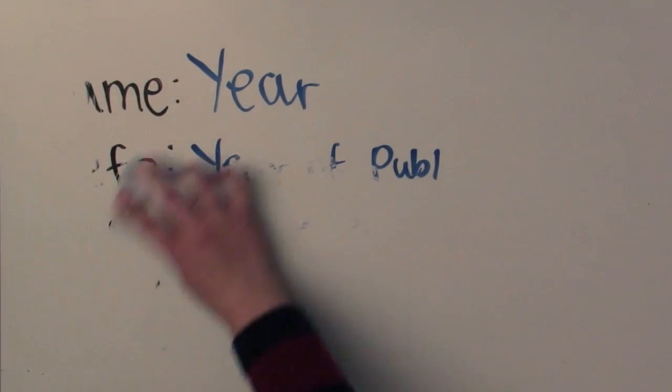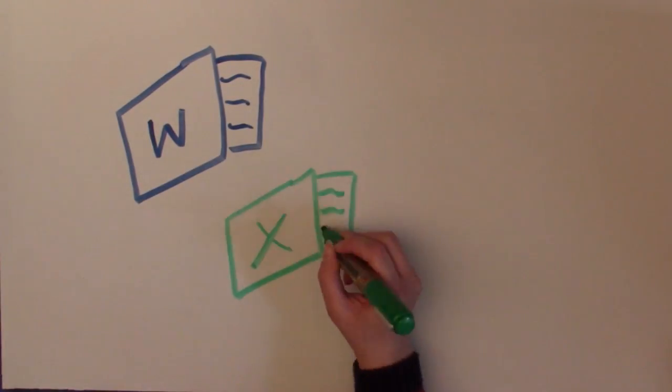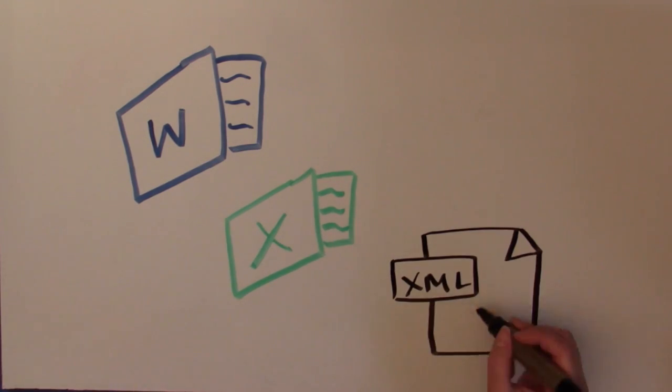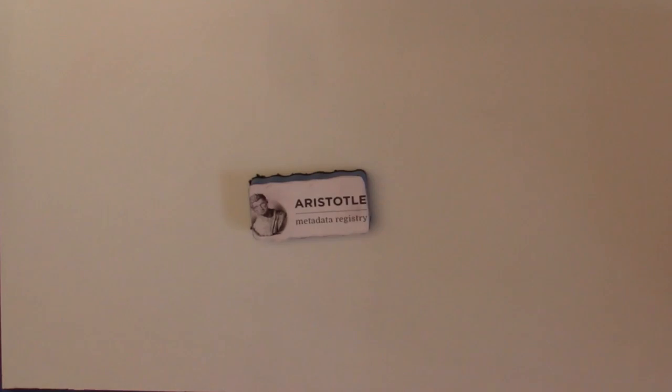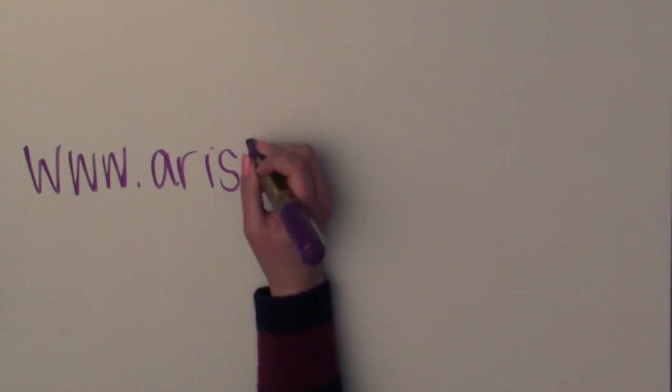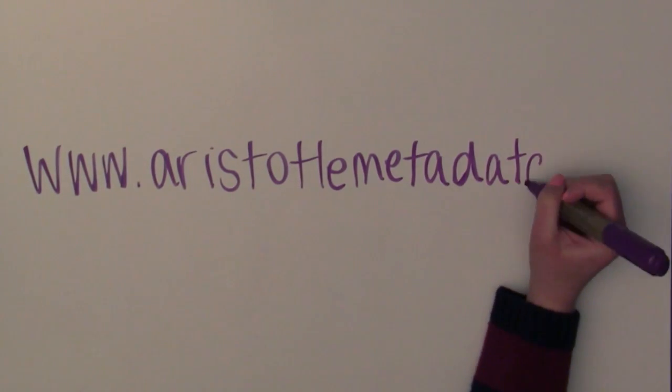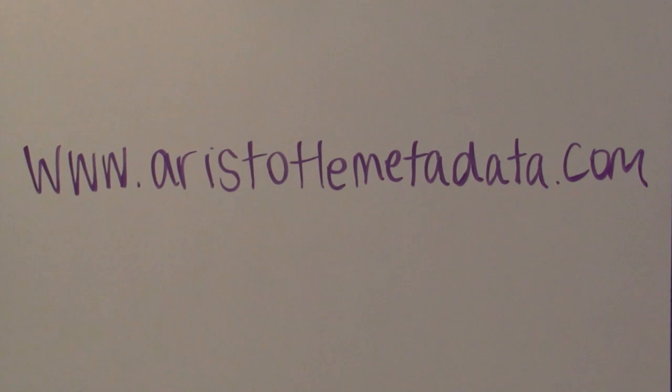So now you know what would go into a data dictionary. But in real life, you wouldn't record them on a whiteboard. You'll find them in a Word document, an Excel spreadsheet, or an XML file, and also in a metadata registry. But whenever you store data, it's important to record a data dictionary to make sure people understand the context of your data.